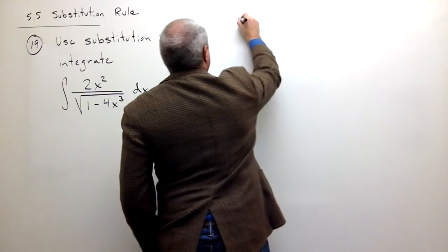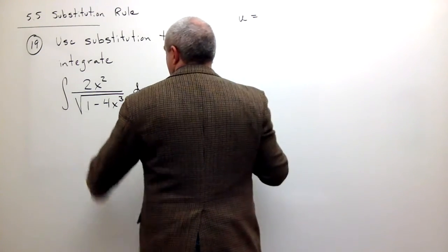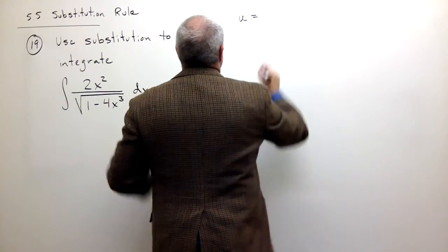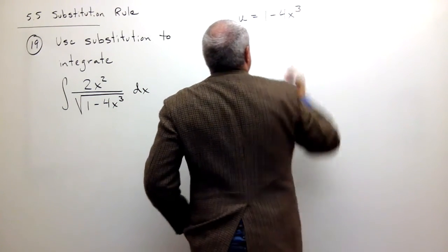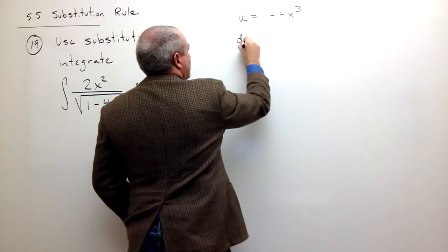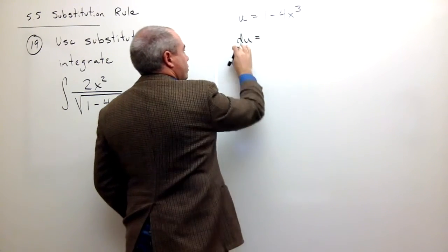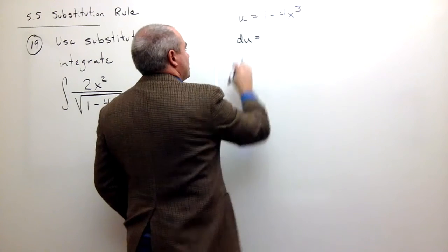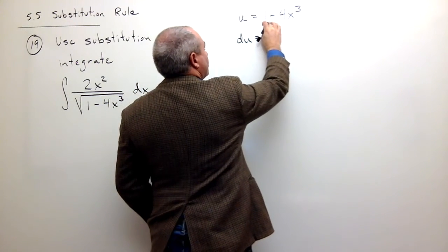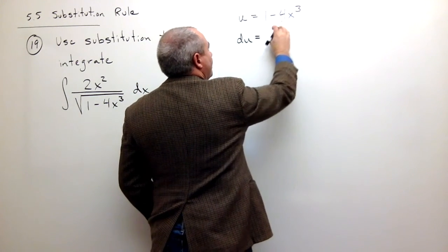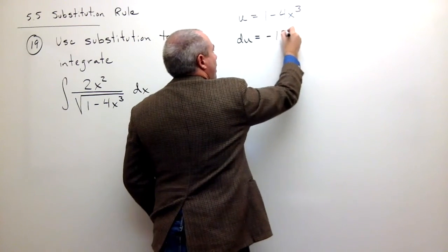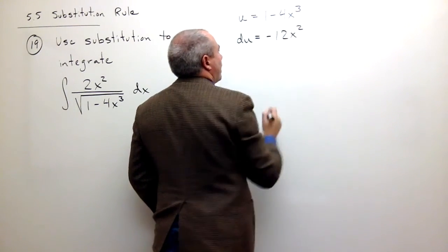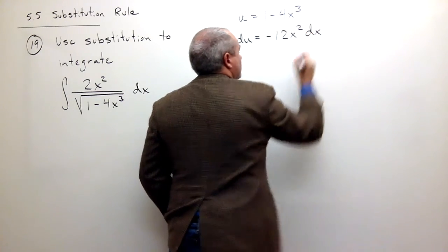So if I let u be equal to 1 minus 4x cubed, then let's take a look at what the derivative of u is or du. Okay, so du would be equal to the derivative of 1 is 0. The derivative of negative 4x cubed is negative 12x squared dx.